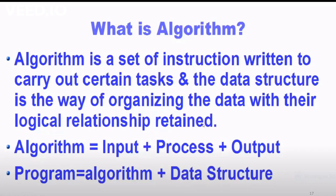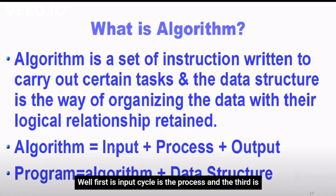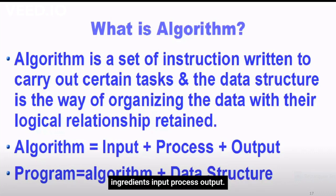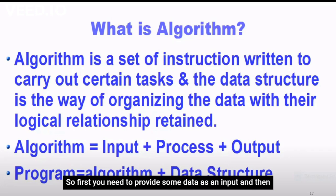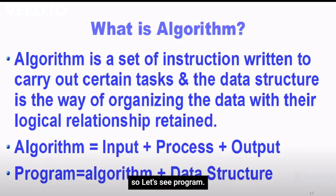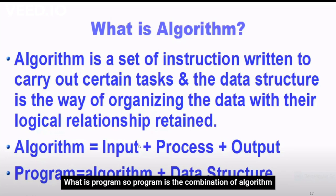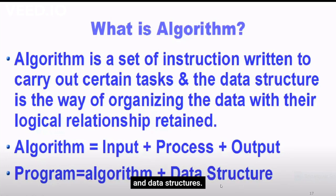First is input, second is the process, and third is the output. So an algorithm is created with three important ingredients: input, process, output. First you need to provide some data as input, then you process the data, and from the processing of the data which you have inputted, you get some output. A program is the combination of algorithm and data structures.